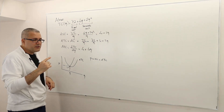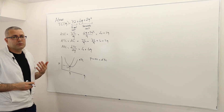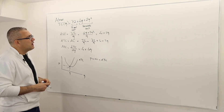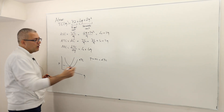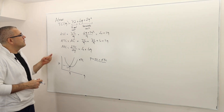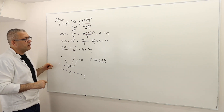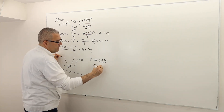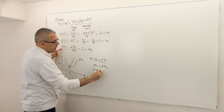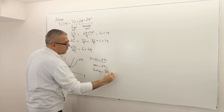To find the long-run price and quantity, we need the point where marginal cost equals average total cost. Setting them equal: MC = ATC gives 4 + 4q = 72/q + 4 + 2q. The 4s cancel, leaving 2q = 72/q. Cross-multiplying gives 2q² = 72, so q² = 36.